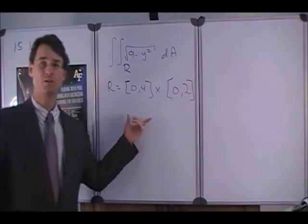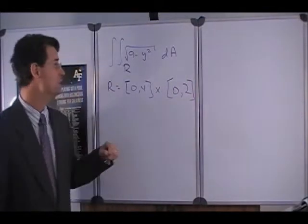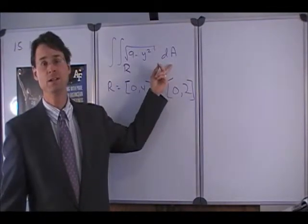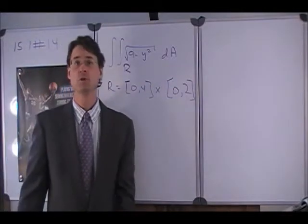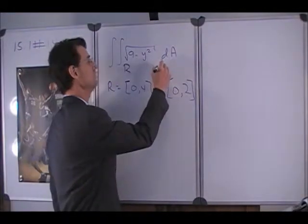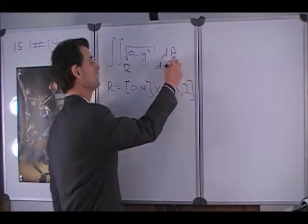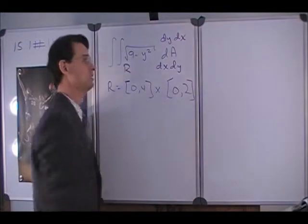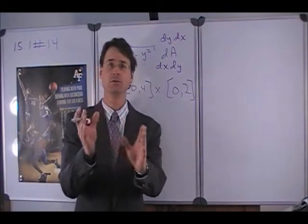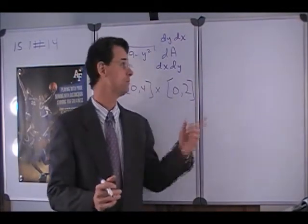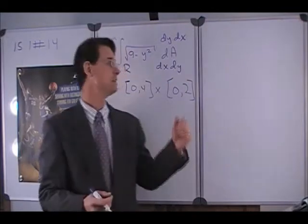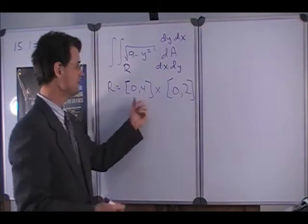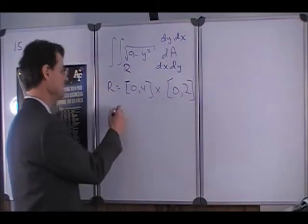And this might be some nomenclature with which we're unfamiliar, so we want to talk about what it means. Well, this dA means over a region in the xy plane, so in Cartesian coordinates, you can either think of it as dx dy, or dy dx, where you can reverse the order of the differentials as long as you also reverse the order of the limits. So what does this part here mean? Well, this is a region in the xy plane.